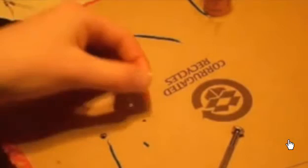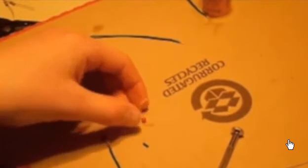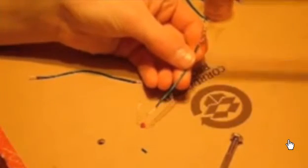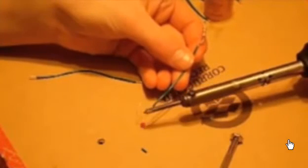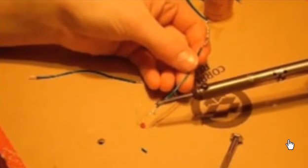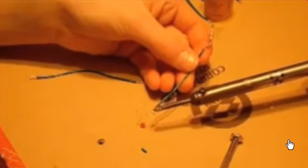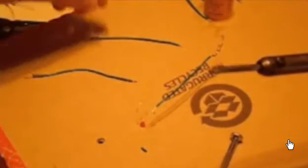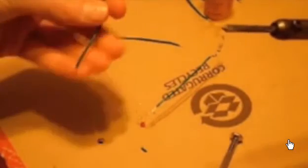Now what I'm going to do is solder two wires to each of the prongs. I'm going to take the other wire and solder it to each of the prongs.